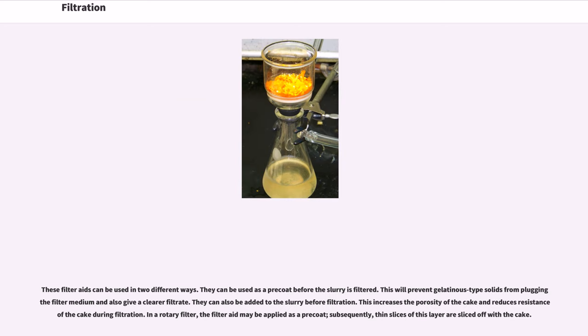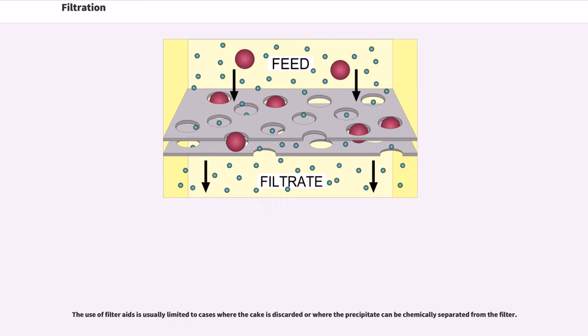In a rotary filter, the filter aid may be applied as a pre-coat. Subsequently, thin slices of this layer are sliced off with the cake. The use of filter aids is usually limited to cases where the cake is discarded or where the precipitate can be chemically separated from the filter.